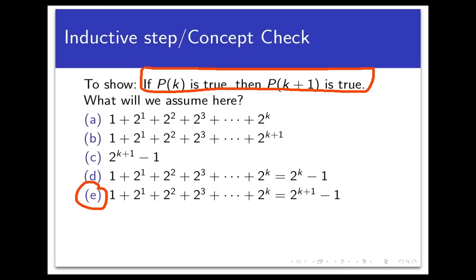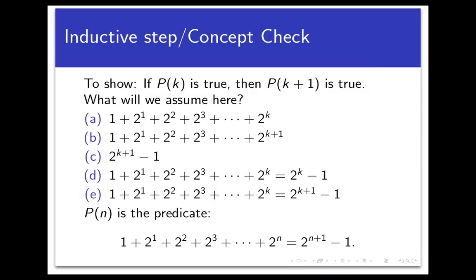The answer is E. You can immediately eliminate the first three options because they are not even predicates — if you put in a value for k, you do not get a true or false logical statement, just an expression with no truth value. What we're assuming in the inductive step is the truth of some statement, so the answer has to be a statement. That leaves the last two. Why is it E and not D? Well, if you replace n with k in the predicate p of n, you should have a k plus 1 on the right-hand side, and that only happens in choice E. So E is our inductive hypothesis.